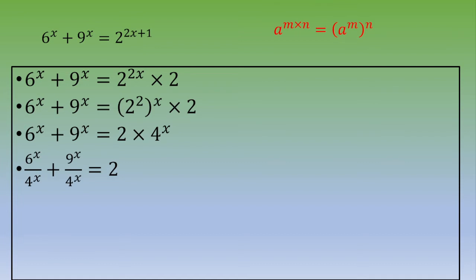Now you get 6 power x divided by 4 power x plus 9 power x divided by 4 power x equals 2.